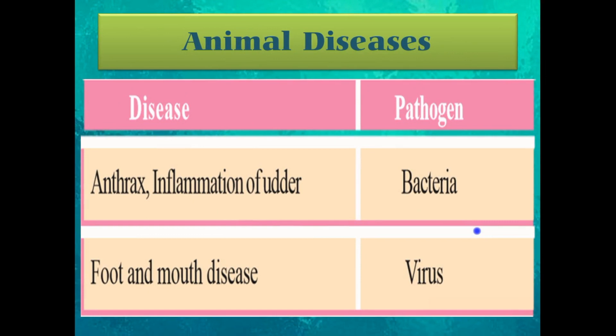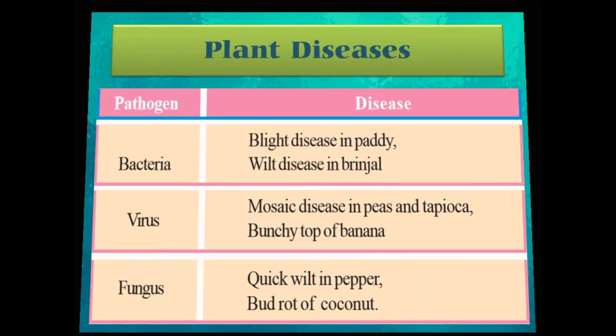Pathogens also affect animals and cause various diseases. Bacteria cause diseases in animals like anthrax and inflammation of the udder, which are common among cattle. Viruses cause another disease in cattle called foot and mouth disease. So bacteria causes anthrax and inflammation of the udder, whereas viruses cause foot and mouth disease.